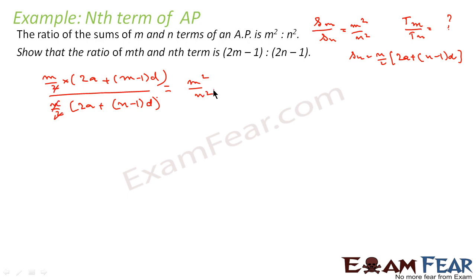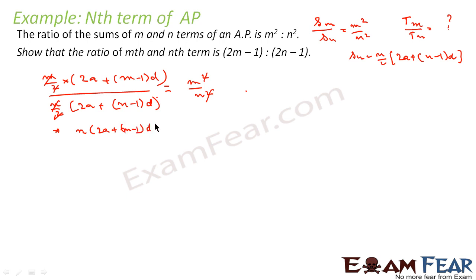We can cancel the 2s, and we can cancel n with n². Multiplying these two equations, what we get is: n into (2a plus m minus 1 into d) equals m into (2a plus n minus 1 into d).